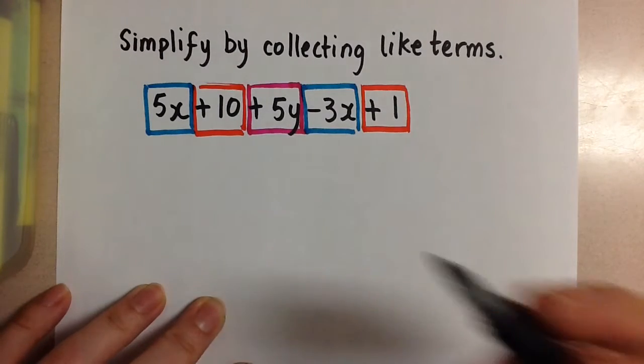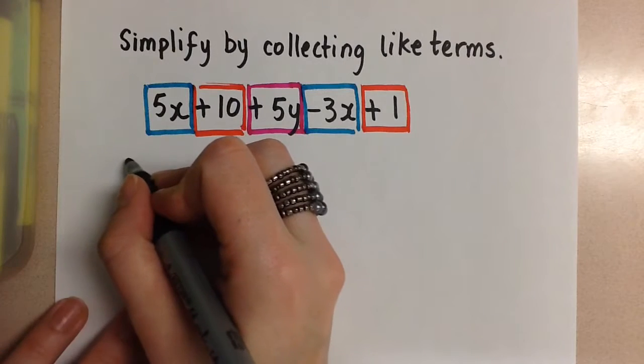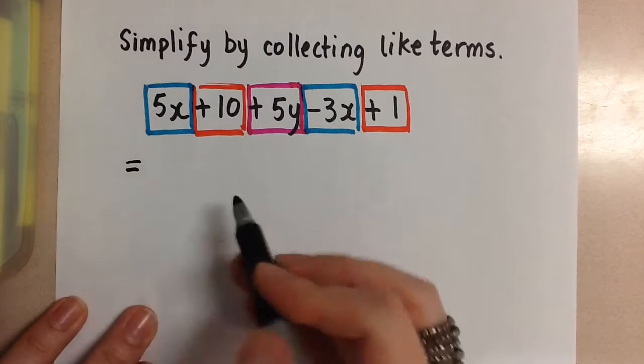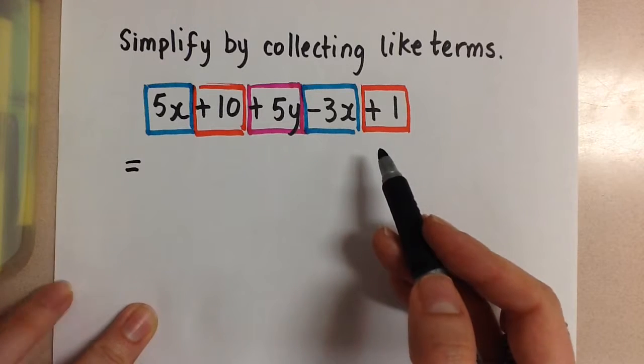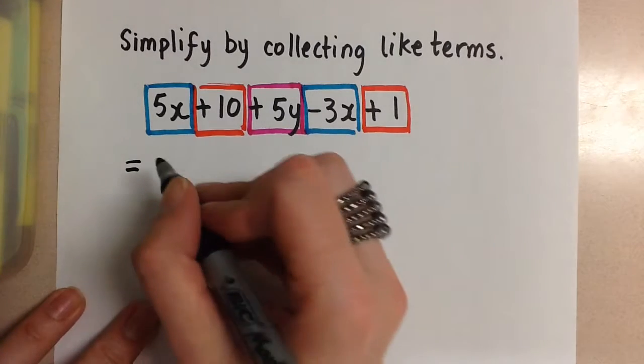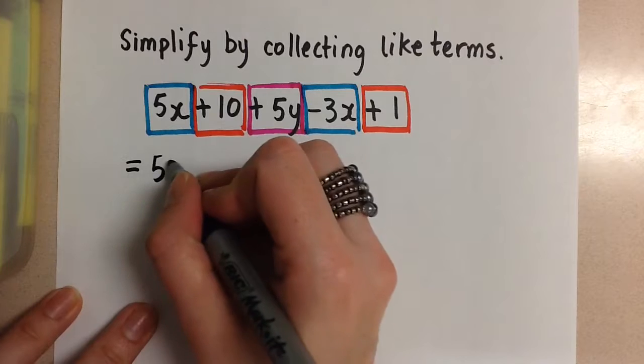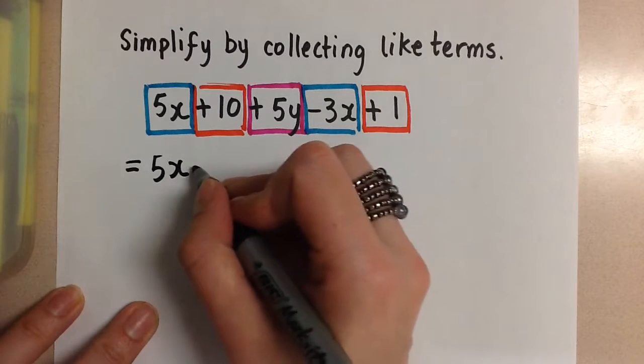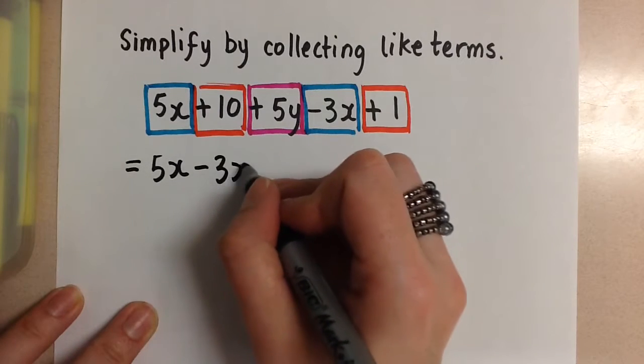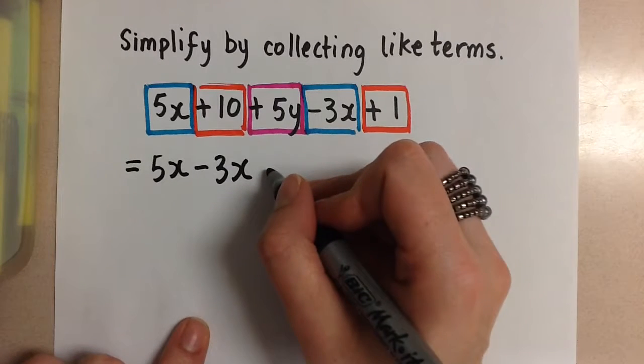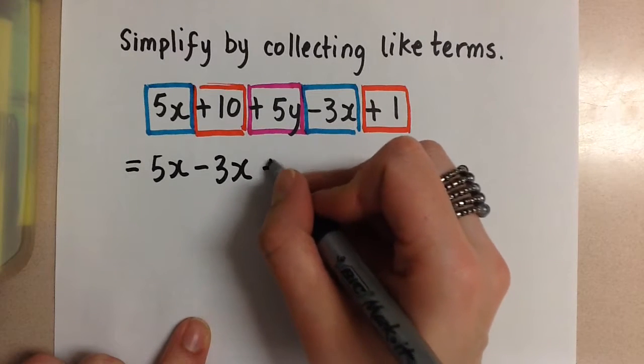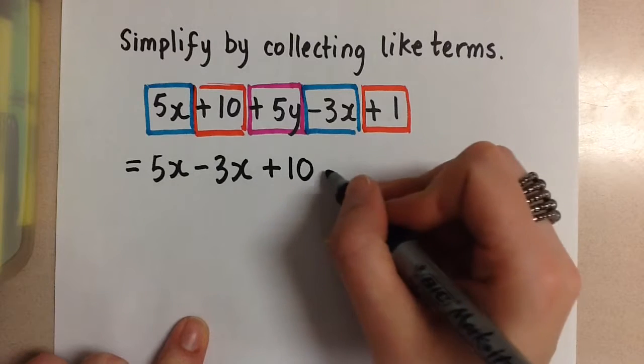So let's go ahead and simplify. We can first do a step where we rearrange all of the terms so that they are next to each other before we collect them. It's an unnecessary step but we can do it if you are confused and you want to make sure that you get everything collected properly.